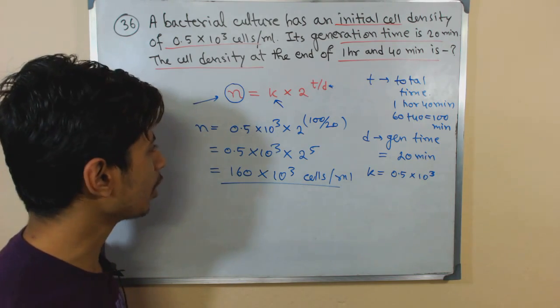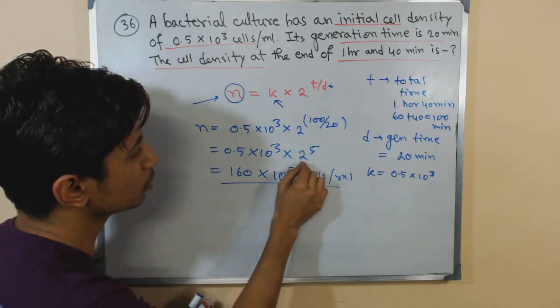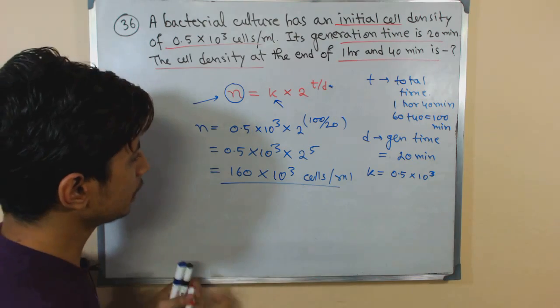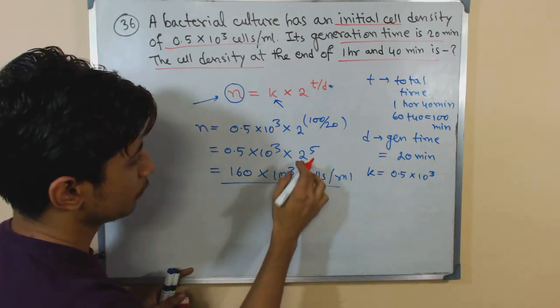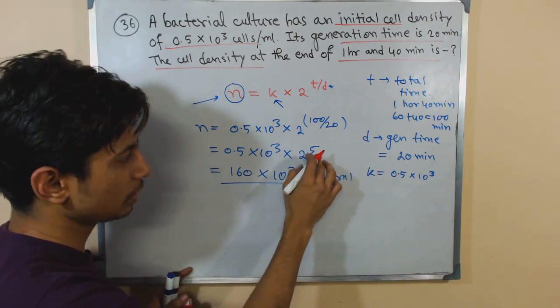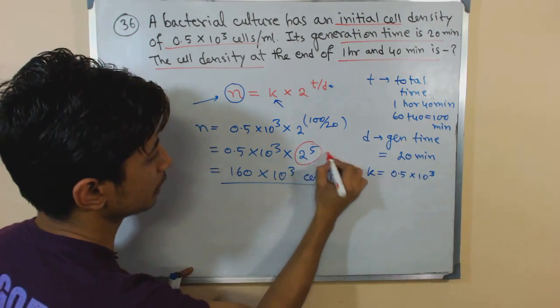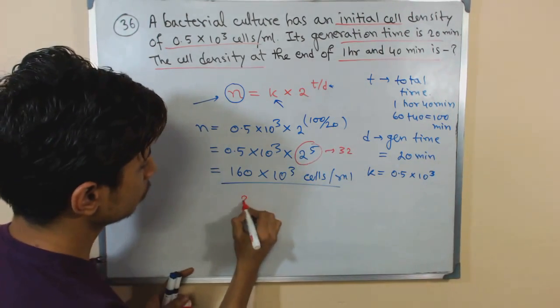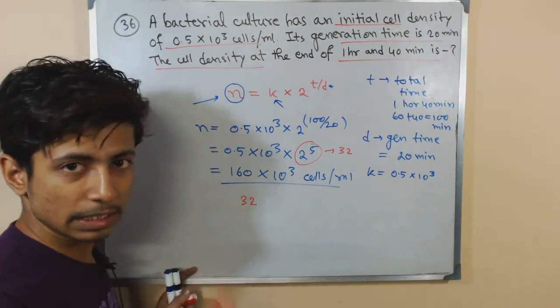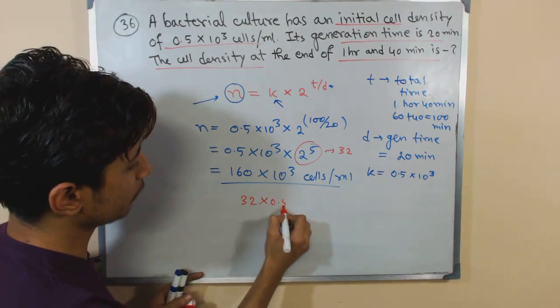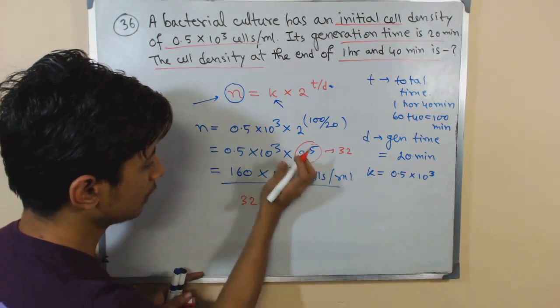You can use your calculator. If you don't use a calculator, simply, 2 to the power 5 means how many times? 4, 8, 16, 32. So it means actually 32.